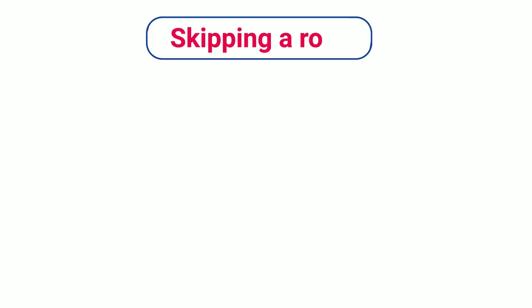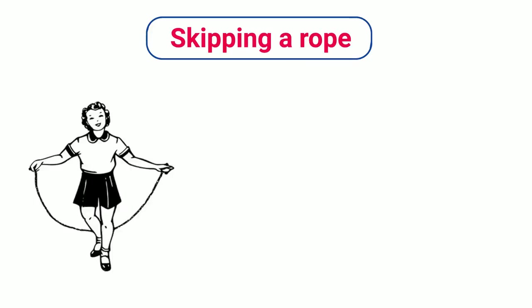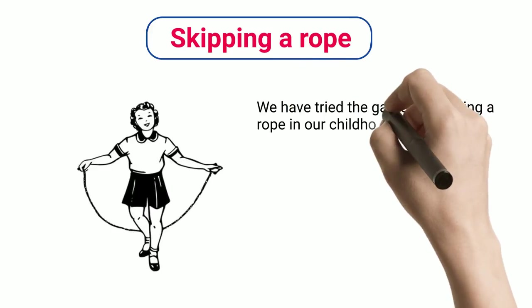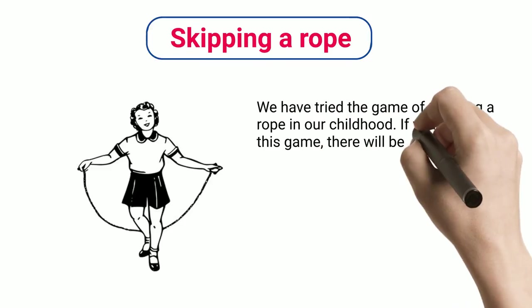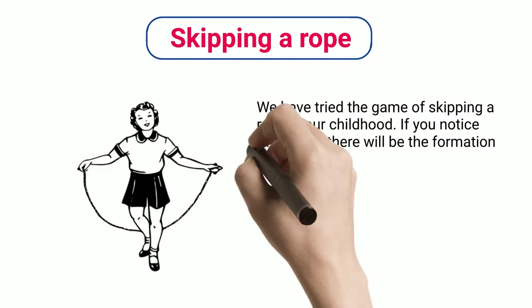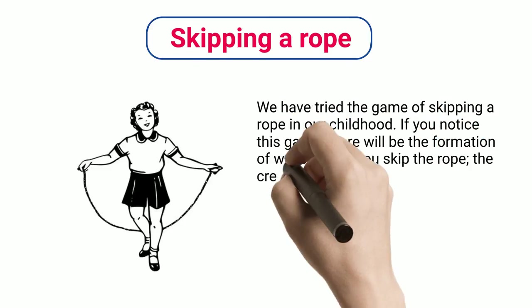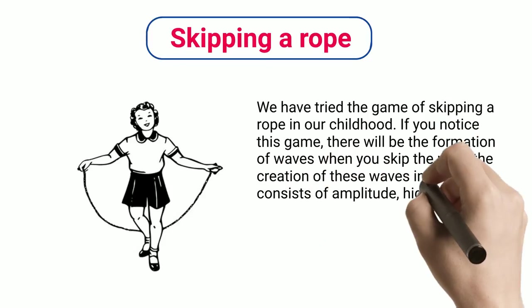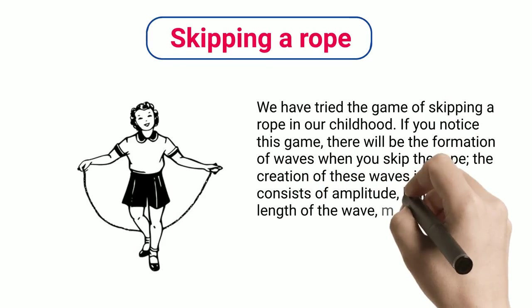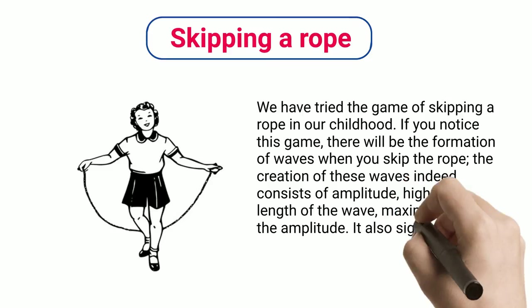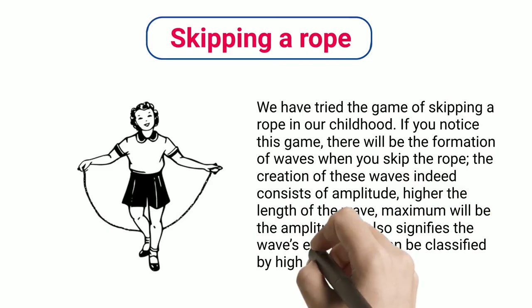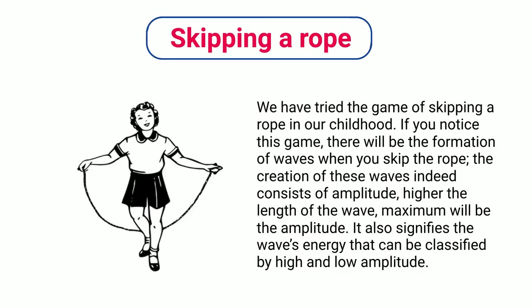Skipping a Rope: We have tried the game of skipping a rope in our childhood. If you notice this game, there will be the formation of waves when you skip the rope. The creation of these waves indeed consists of amplitude — the higher the length of the wave, the maximum will be the amplitude. It also signifies the wave's energy, which can be classified by high and low amplitude.